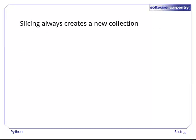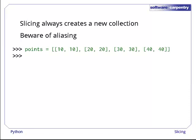The other thing that's important to remember about slicing is that it always creates a new object. But only the thing being sliced is copied, so aliasing is still possible. Here's an example. The list points has four elements, each of which is a reference to a two-element list.